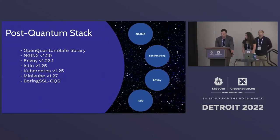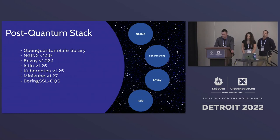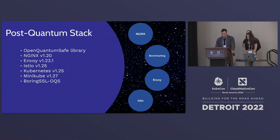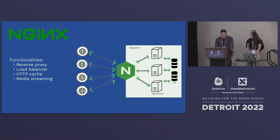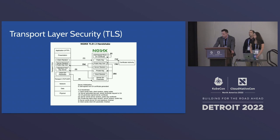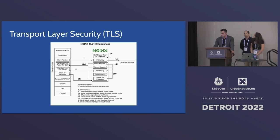Our approach was to tackle the most commonly used open source software packages for web authentication, encryption, and communication. In order of development: first NGINX for a proof of concept and to develop robust benchmarking methods, then Envoy to solve the same problem in a more complex system, and finally Istio to deploy that system across a mesh network of microservices. All of this was made possible using the post-quantum library developed by Open Quantum Safe. TLS for the post-quantum implementation is mechanically identical to a standard implementation — important for compatibility and a seamless transition.